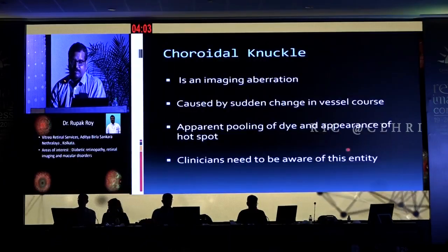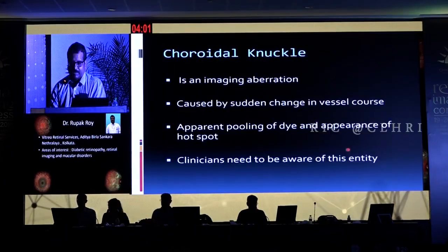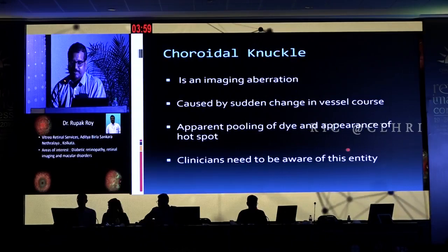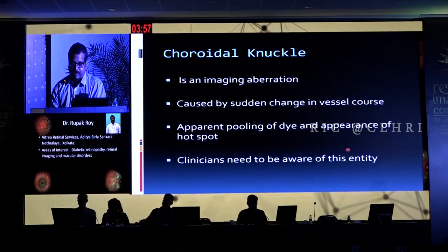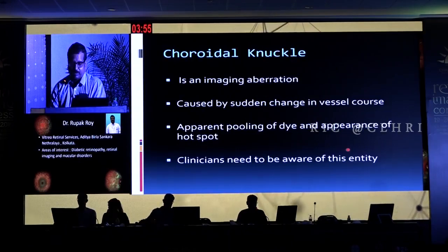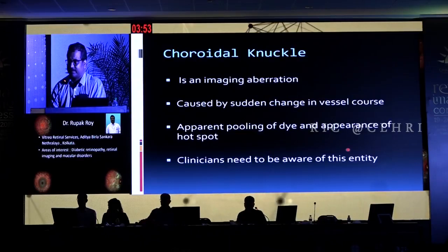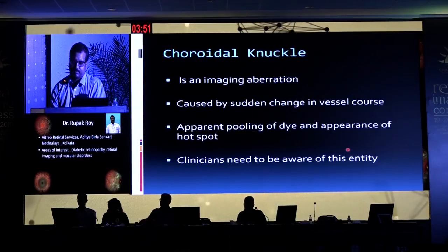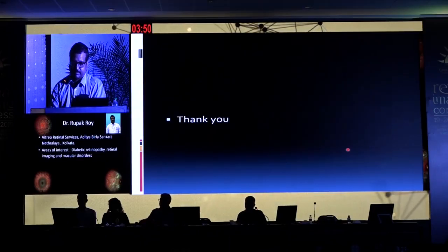In a nutshell, a choroidal knuckle is an imaging aberration. It is caused by a sudden change in the vessel course, apparent pooling of dye, and the appearance of a hotspot. Clinicians should be aware of this entity so as not to misdiagnose these as polyps.